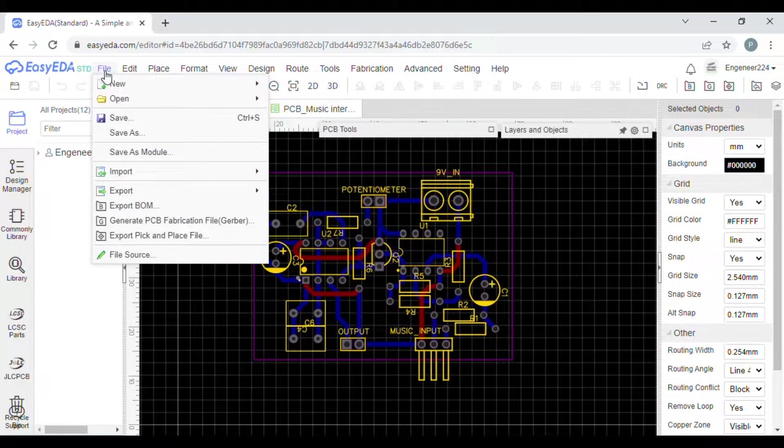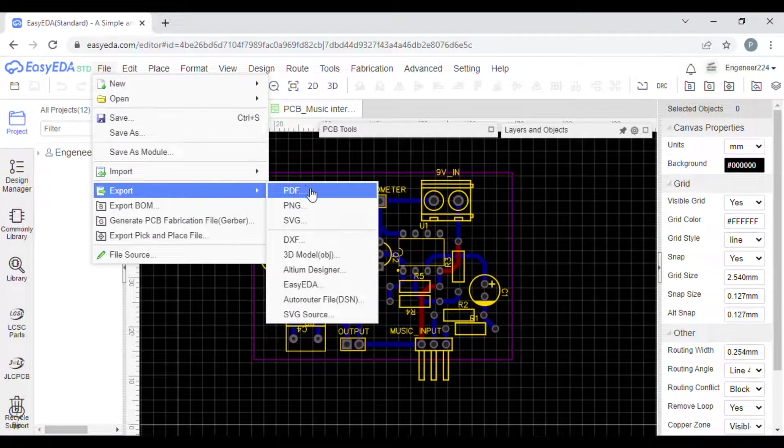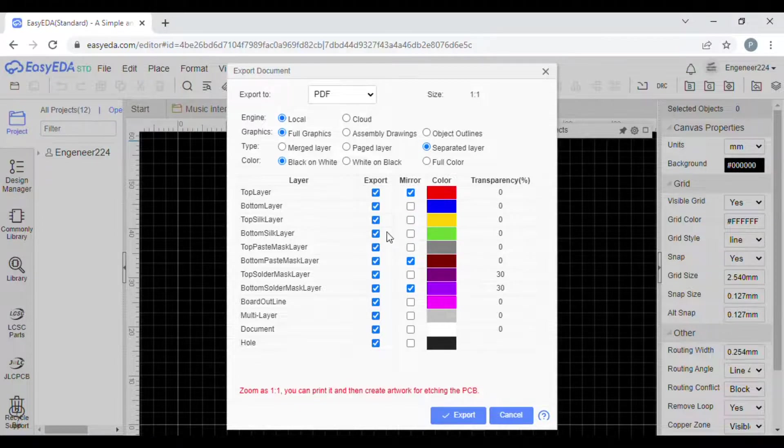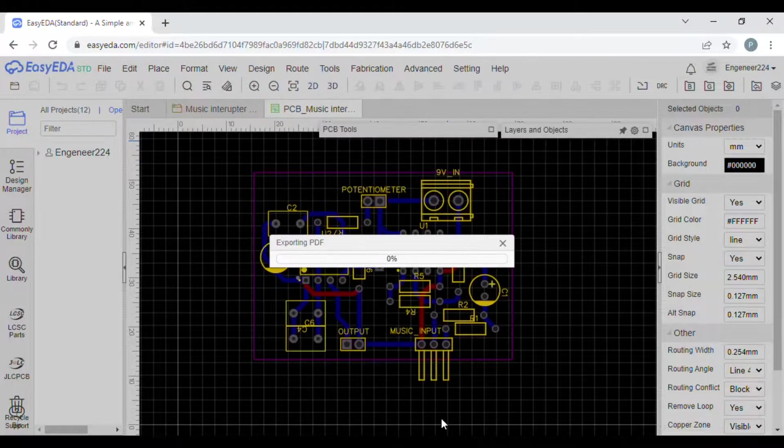Then what you want to do is export this file as PDF, separated layers, and you want to mirror the top layer and remove the mirroring from the bottom layer. You can turn up the other layers you don't need, and export this into some folder.